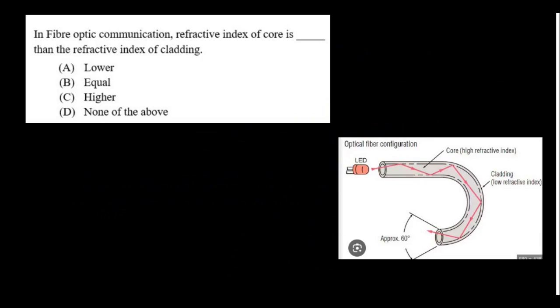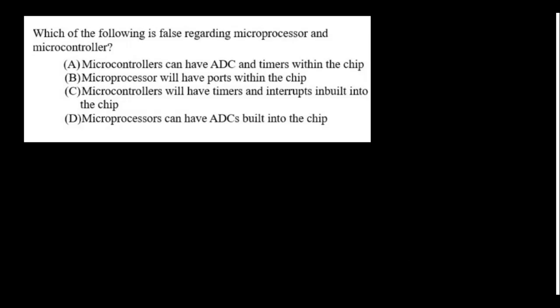In fiber optic communication, the refractive index of core is higher than the refractive index of cladding. Which of the following is false regarding microprocessor and microcontroller? Microprocessors can have ADC built into the chip—that is never true. In microcontrollers we can build the ADC into the chip, but not in microprocessors. So this is the false statement.